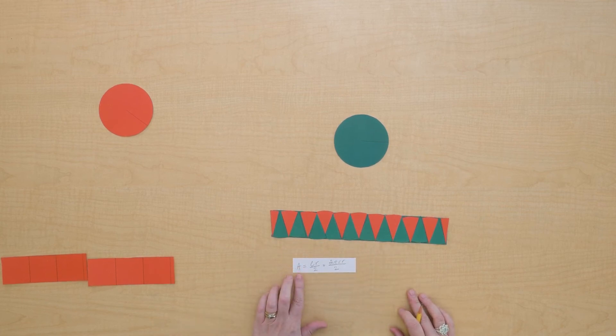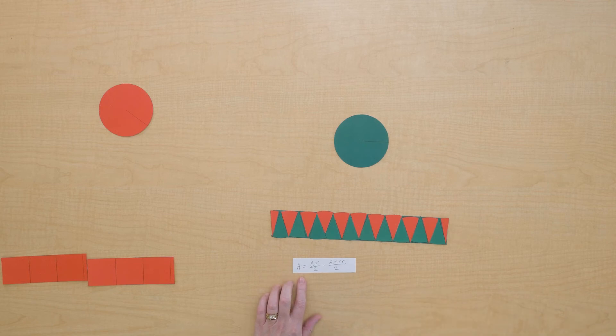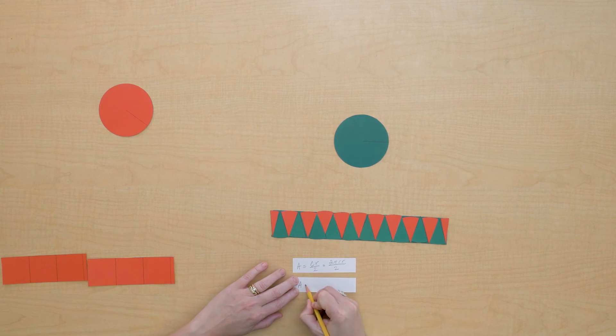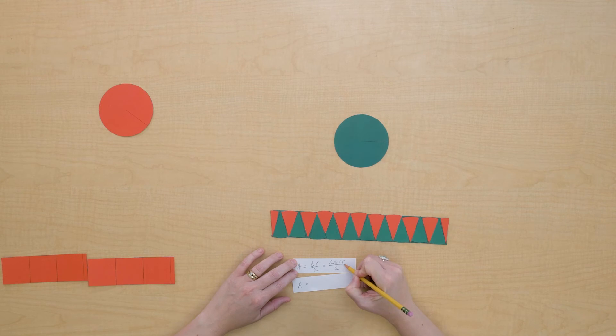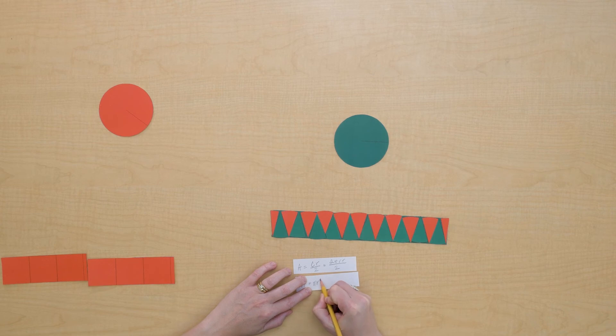I think we can simplify this equation a little bit. So the area of a circle equals, let's see, these cancel each other out, and r times r is r squared. So the area of a circle equals π times the radius squared.